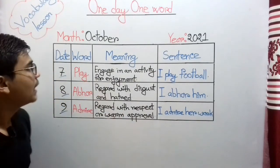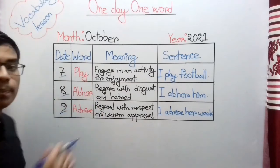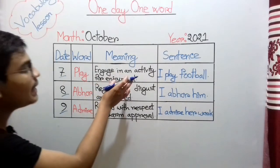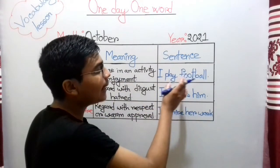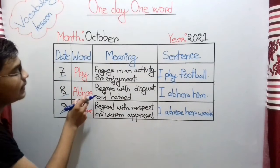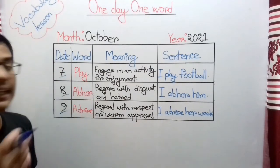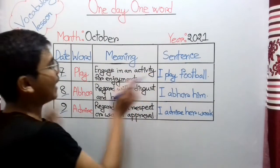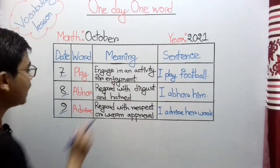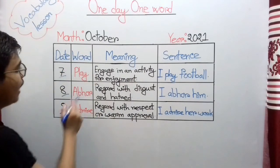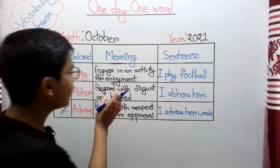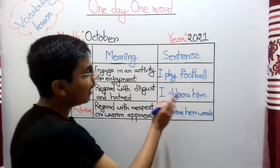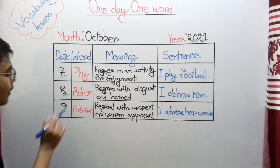The first word is 'play' — the meaning is 'engage in an activity for enjoyment' — and the sentence is 'I play football.' The second word is 'ever,' which on 8th October 2021 I learned. 'Ever' here means 'regard with disgust and hatred,' and the sentence is 'I ever him.'